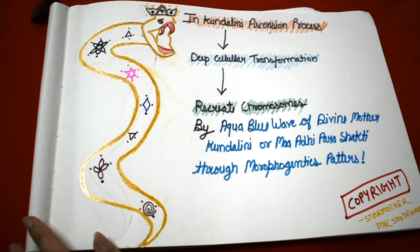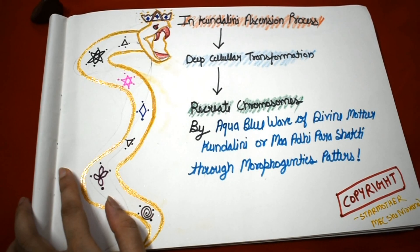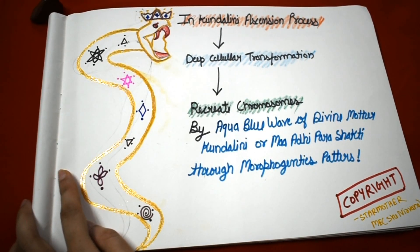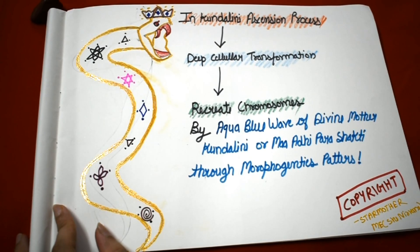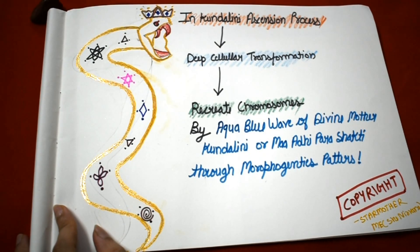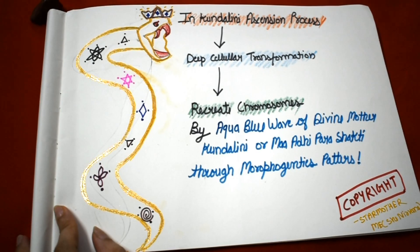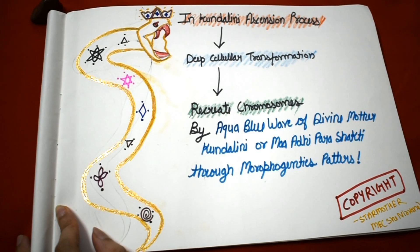Now, in our ascension journey — especially in the kundalini ascension journey — we are experiencing a deep level of cellular transformation. In this transformation, the mother kundalini is recreating new chromosomes, new patterns of those 28 chromosomes, through the aqua blue flame of the divine mother via morphogenic patterns. In the process of the kundalini ascension journey, this recreation of new chromosomes by the aqua blue waves of the divine mother through morphogenic patterns heals this defect — it heals the DNA and chromosome defects.